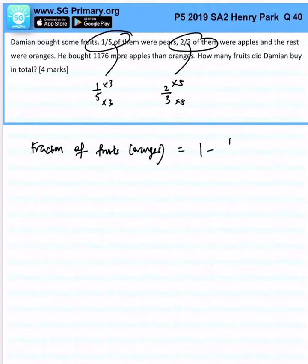1 minus 1 over 5 minus 2 over 3. Multiply by 3, multiply by 3, multiply by 5, multiply by 5. 1 minus 3 over 15 minus 10 over 15. And you know that you will be left with 2 over 15.